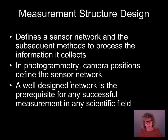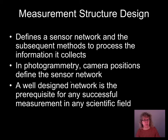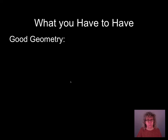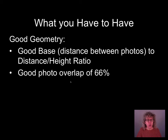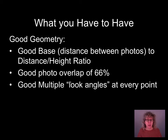The design of our photogrammetric sensor network means moving the camera to different positions — that's what defines the sensor network. A well-designed network that covers everything we need is a prerequisite for good measurement. To get good geometry, you need a good base-to-distance ratio, good overlap of photos — our recommendation is 66% or two-thirds overlap — and multiple look angles at every point on the surface we're collecting.